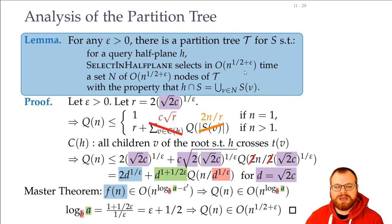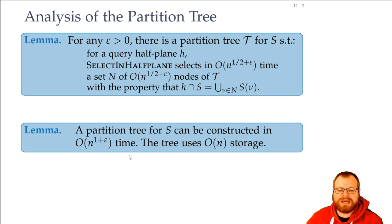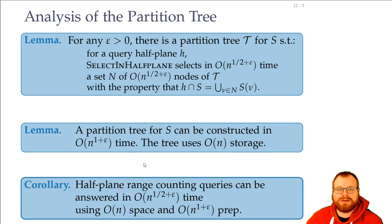The time we have is also exactly the number of nodes we look at — the number of children we select. So we get that many nodes, and that proves the query time. With this lemma and the construction time we had before, we get as a corollary that half-plane range counting queries can be answered in order of n to the 1 over 2 plus epsilon time, using order of n to the 1 plus epsilon preprocessing and order of n space.